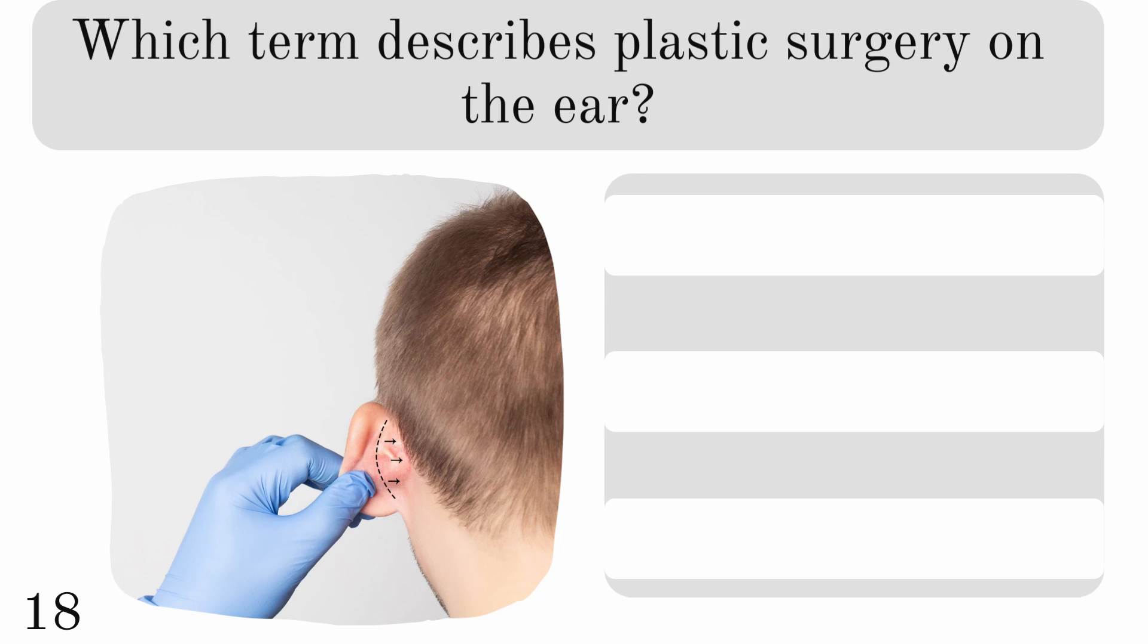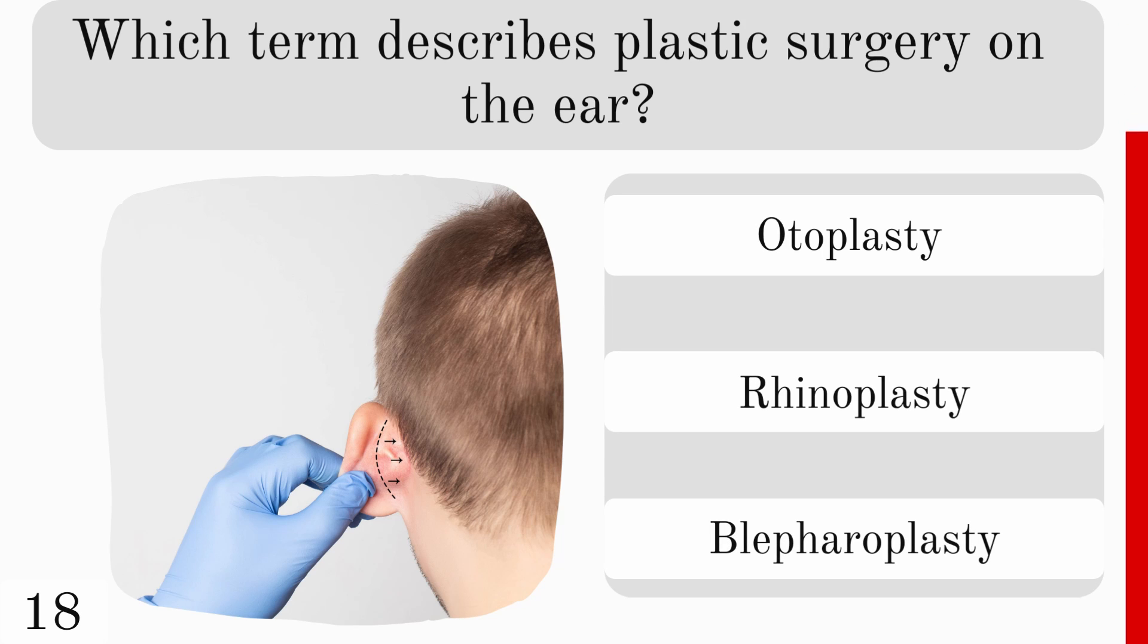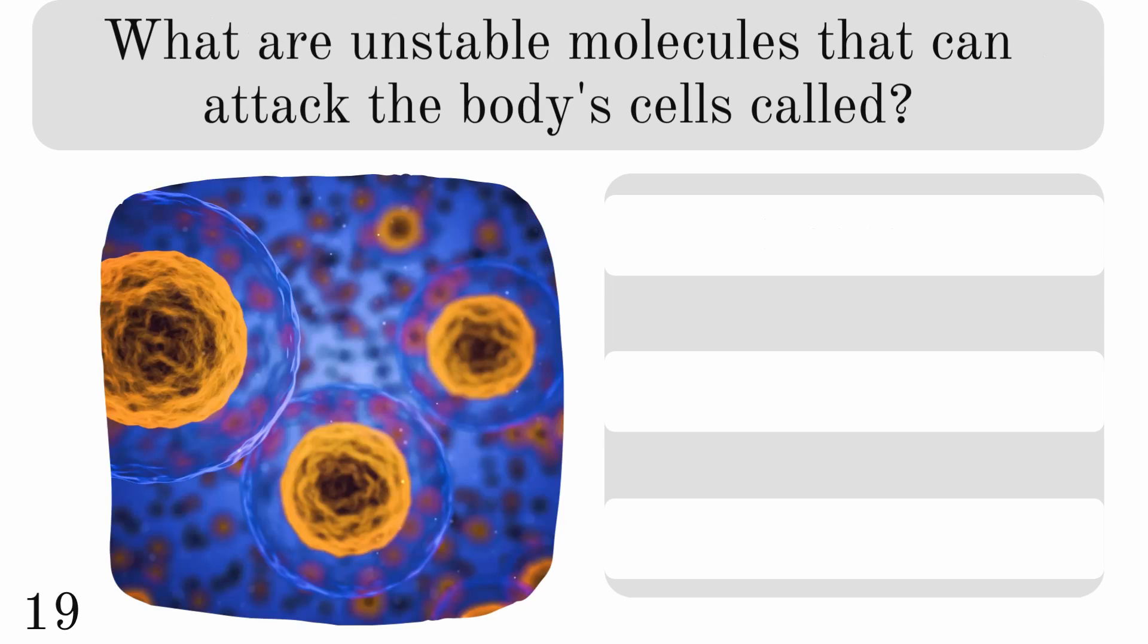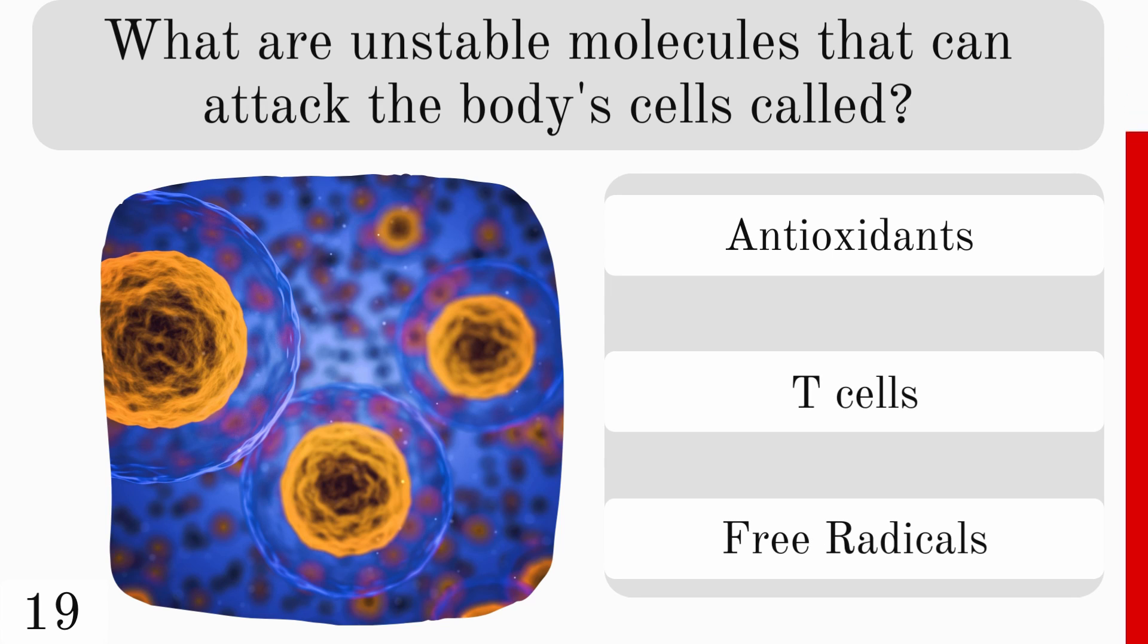Which term describes plastic surgery on the ear? Otoplasty, rhinoplasty, or blepharoplasty? And the correct answer is otoplasty. What are the unstable molecules that can attack the body's cells called? Are they antioxidants, T-cells, or free radicals? And they are free radicals.